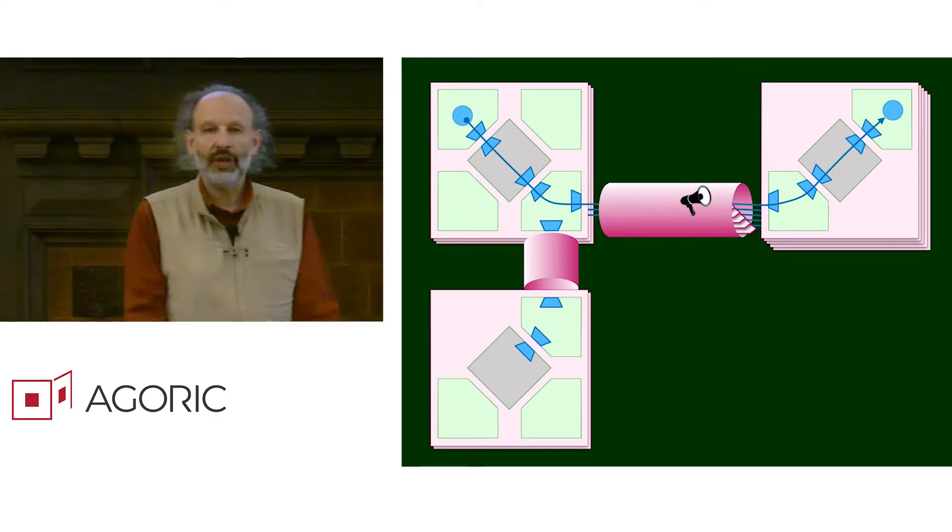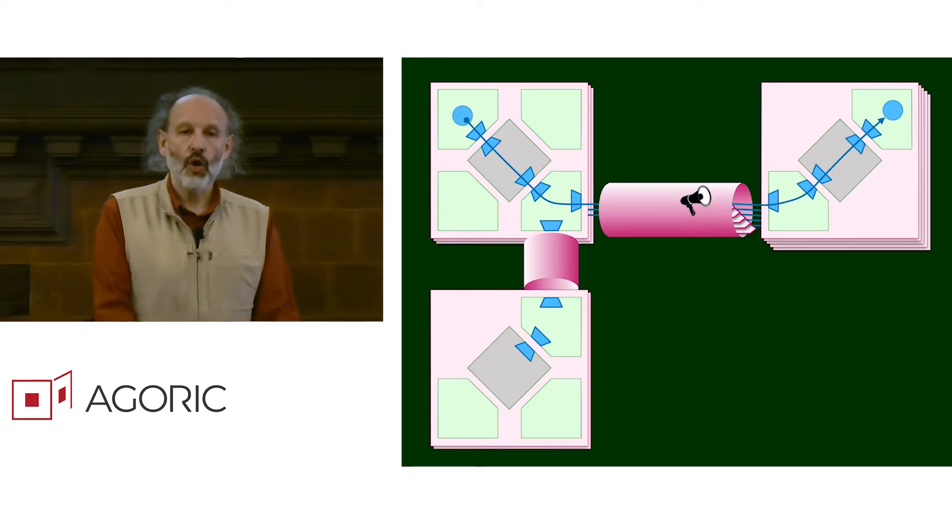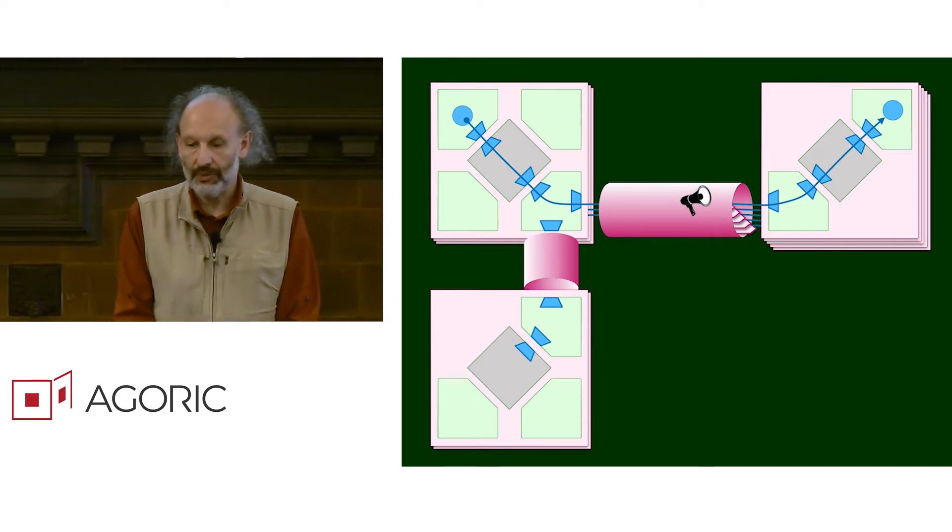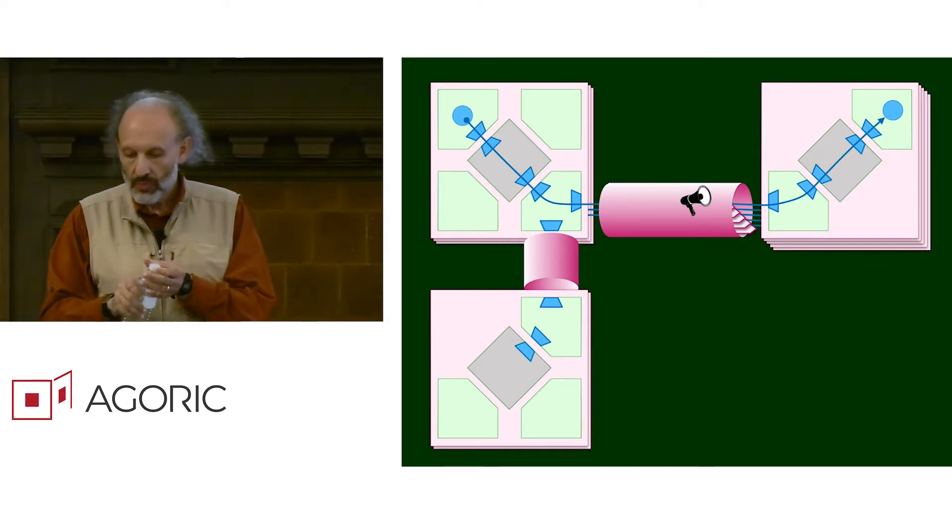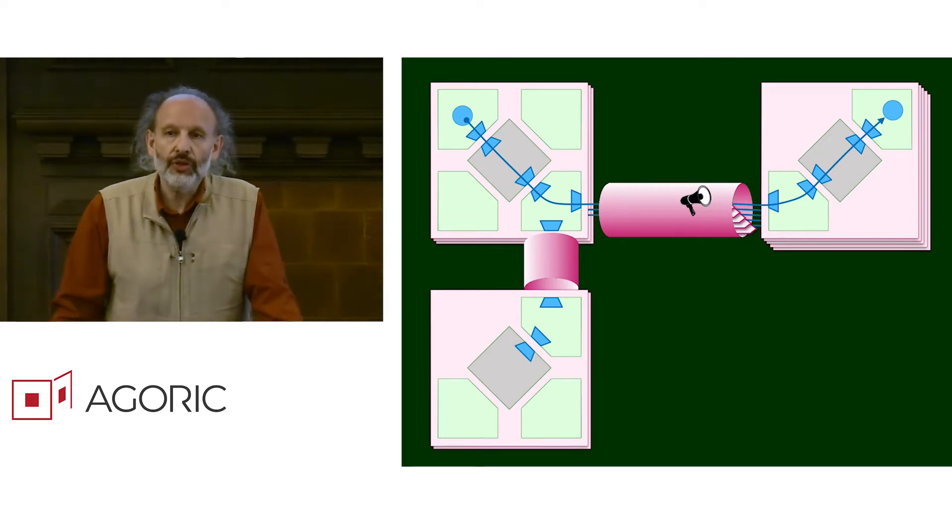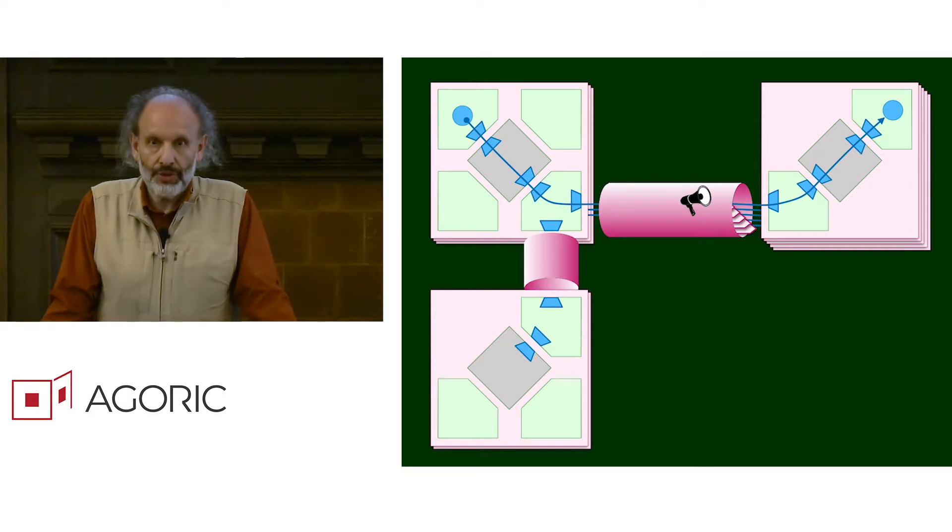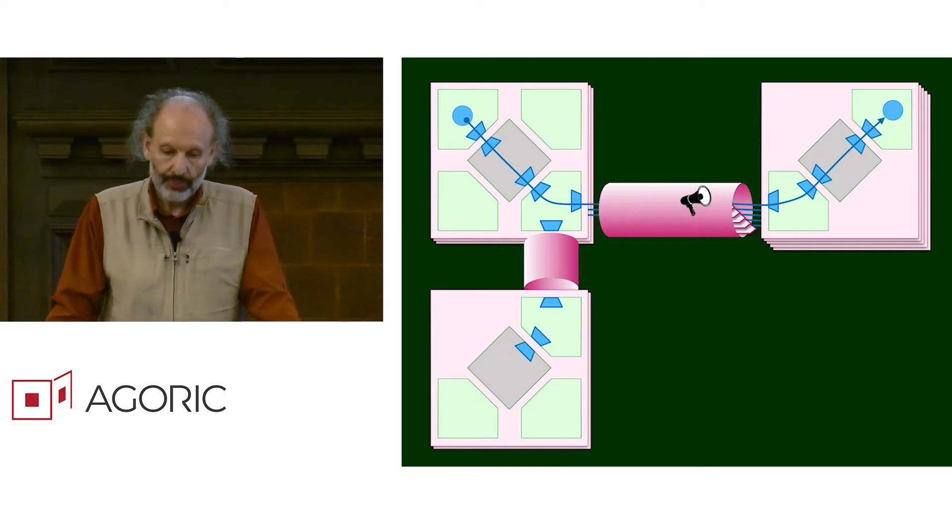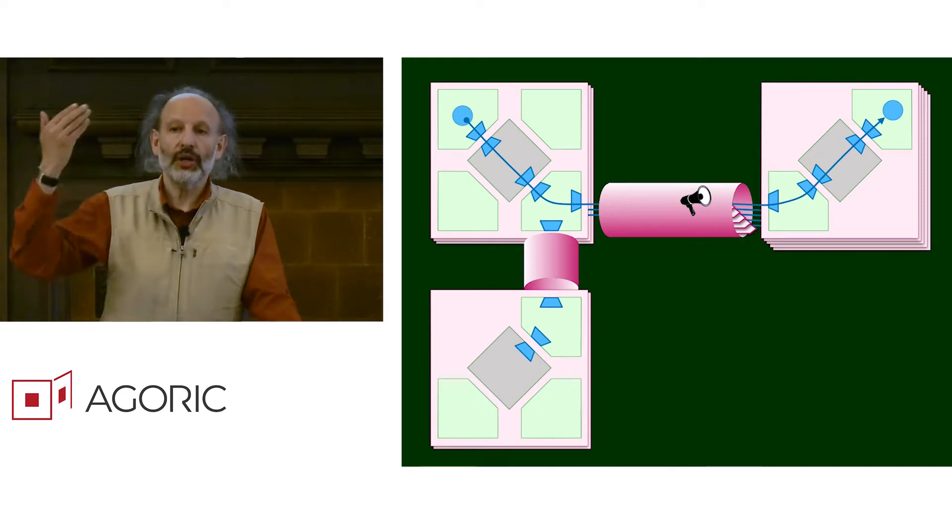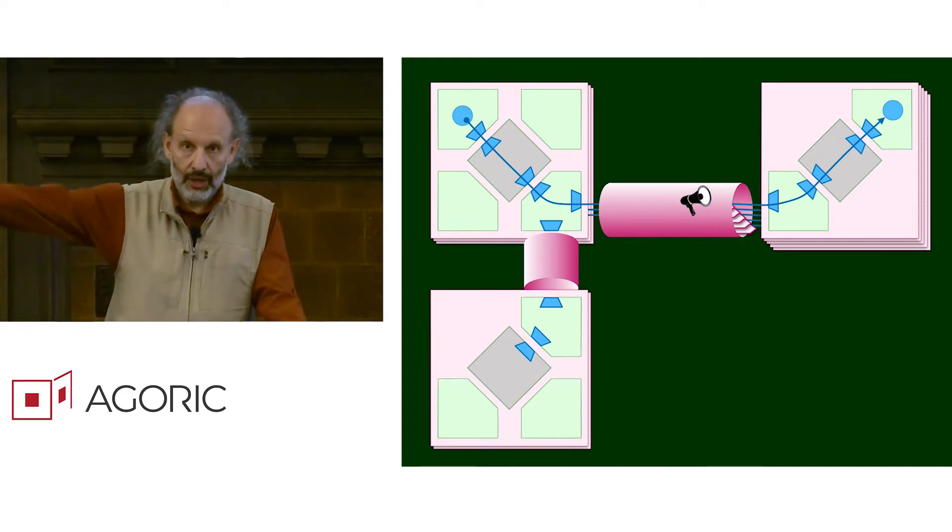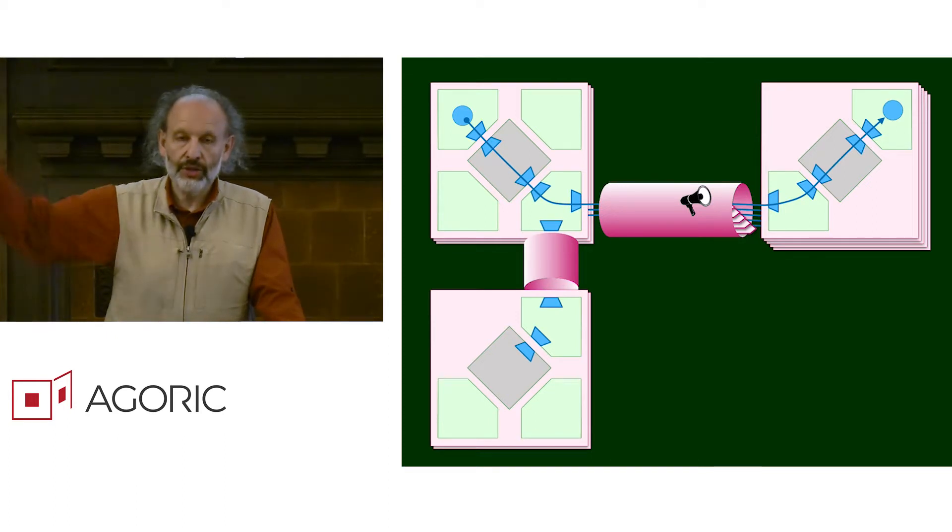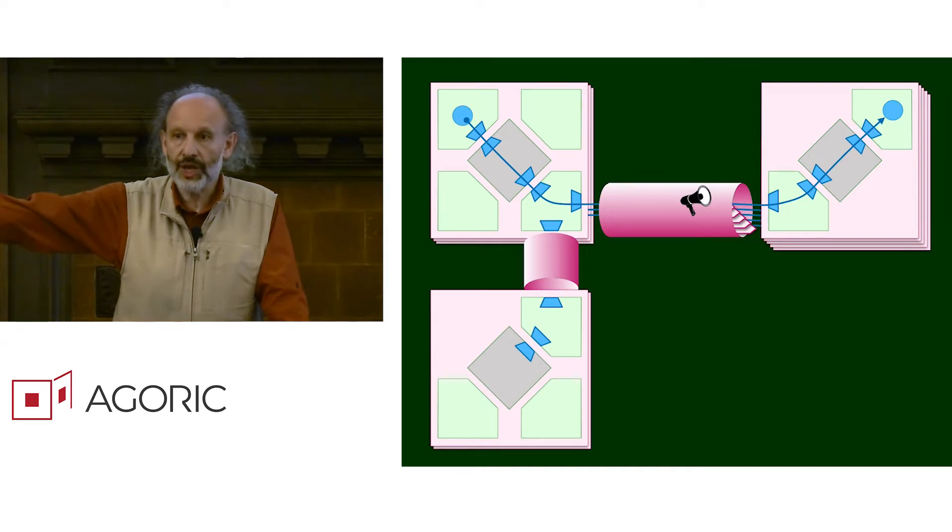Every time somebody constructs a chain architecture, they also construct a light client. The light client embodies the logic for speaking to the chain they're co-designed with and for validating that something that allegedly happened on the chain actually happened on the chain. This broadcast device for broadcasting messages that have been observed into the chain on the right is using the logic from the light client of the chain on the right.